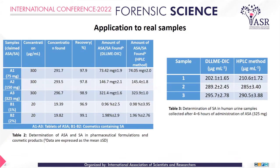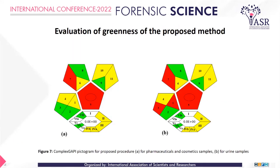The proposed DLLME-DIC method was effectively used to quantify aspirin and salicylic acid in various cosmetic samples, human urine samples, and pharmaceutical samples. For human urine samples, samples were obtained from two females and one male aged between 26 to 40 years, and results were compared with the HPLC method.